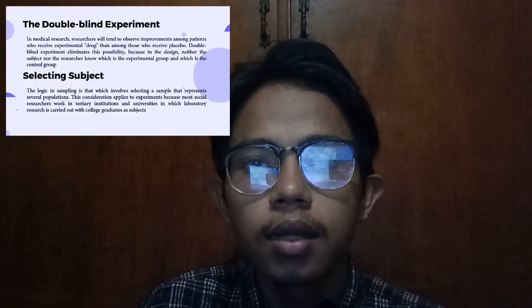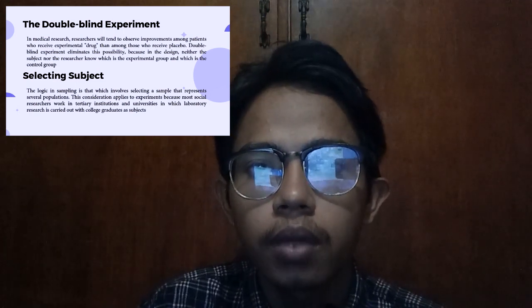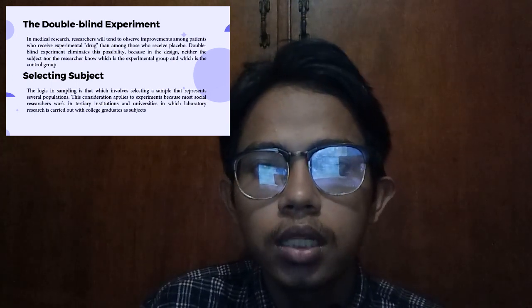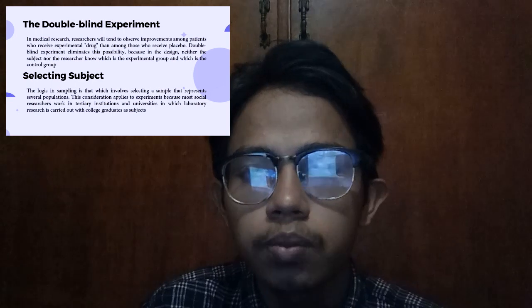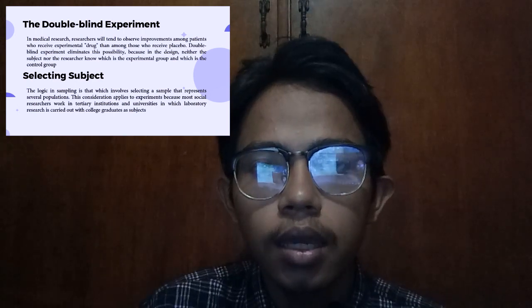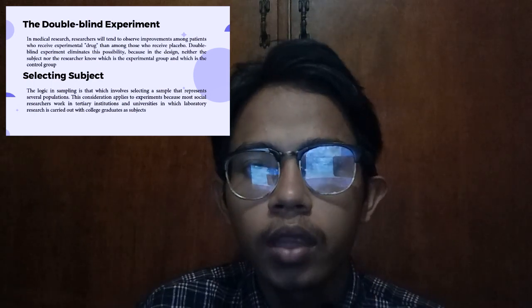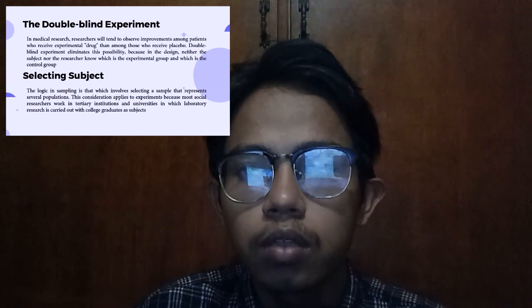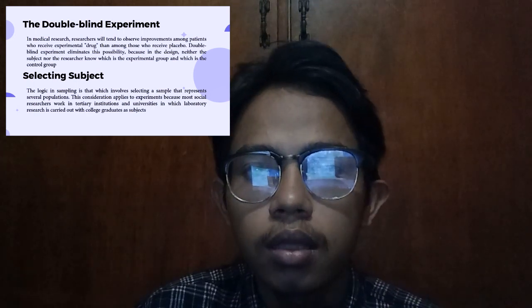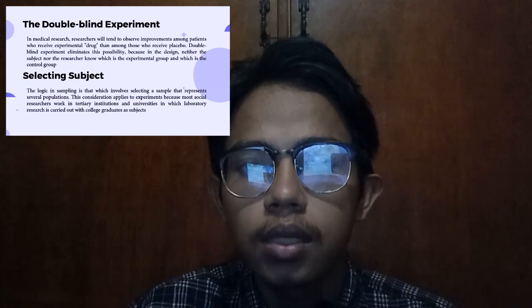The double-blind experiment: In medical research, there is a tendency to observe improvement among patients who receive an experimental drug compared to those who receive a placebo. Double-blind experiments eliminate this possibility because in this design neither the subjects nor the researchers know which is the experimental group and which is the control group. The logic in sampling involves selecting a sample to represent several populations. Most social researchers work in regular institutions and universities where laboratory research is carried out with college students as subjects.